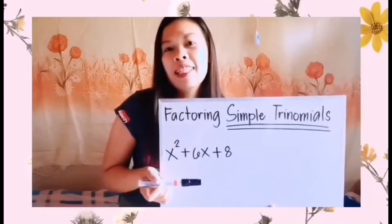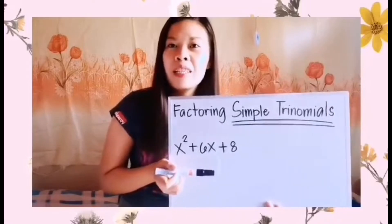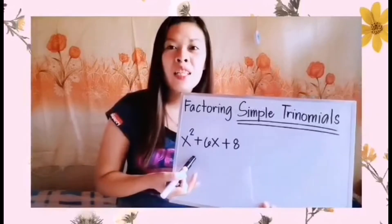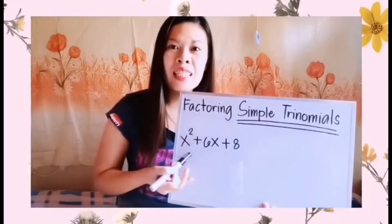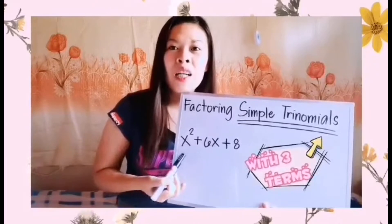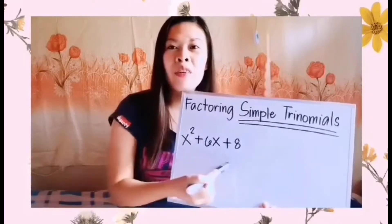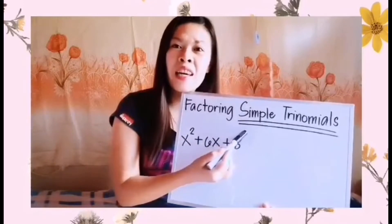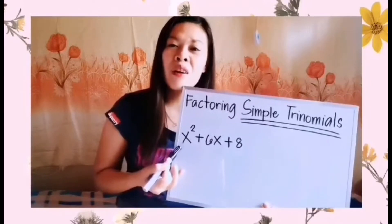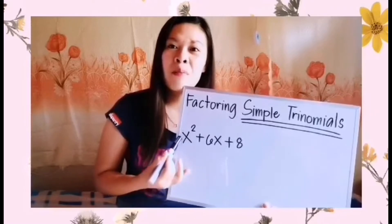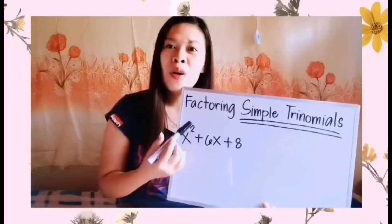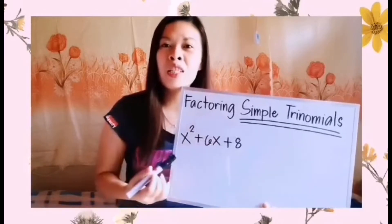Let us have our first category: Factoring Simple Trinomials. A trinomial has three terms — one, two, three. It is a simple trinomial when the numerical coefficient of the first term is one. So we have an imaginary one here, which makes this trinomial a simple one.